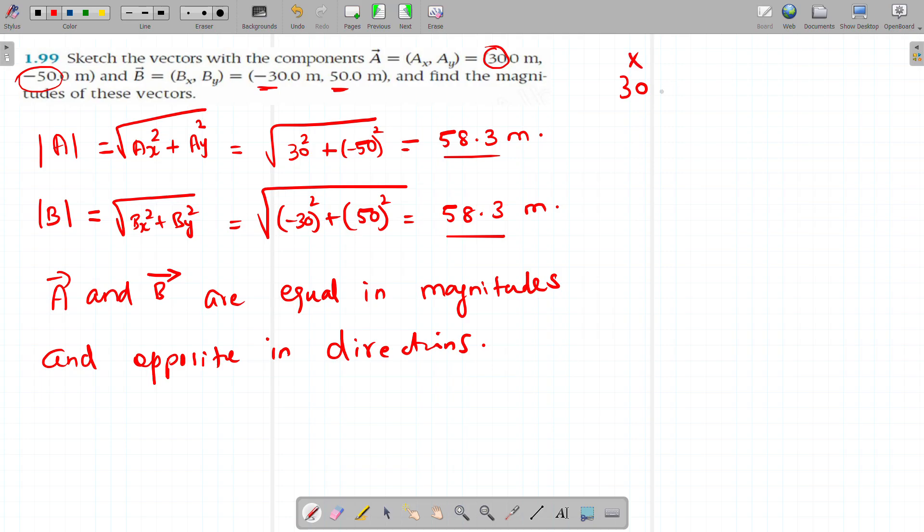Here you can see the x value coordinate is 30 and the y coordinate is minus 50. And for B vector, x coordinate is minus 30 and B coordinate is 50. Thank you.